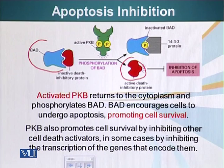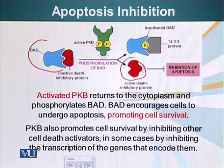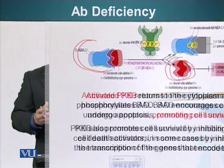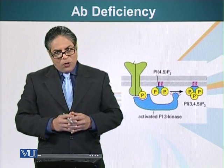So essentially, PKB is promoting cell survival. PKB also promotes cell survival by inhibiting other cell death activators — in some cases by inhibiting the transcription of the genes that encode them. So PKB plays a very important role in cell survival. We will continue our discussion about receptor tyrosine kinases in the next module.